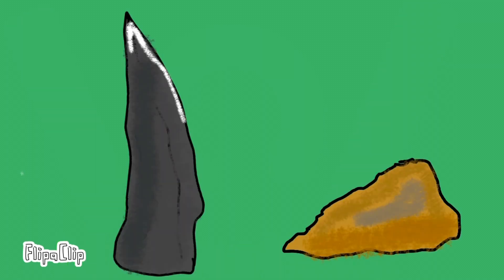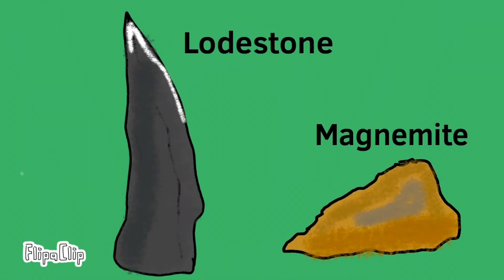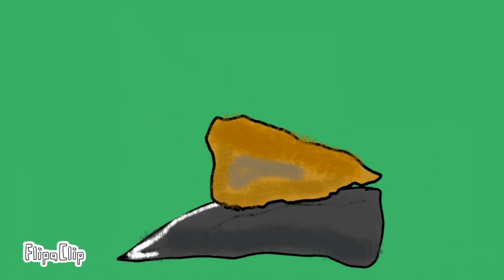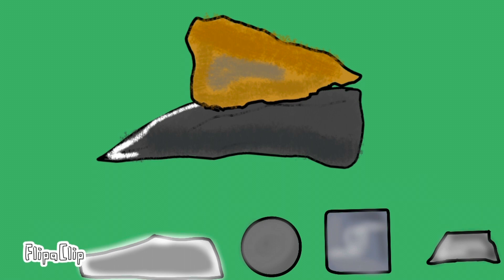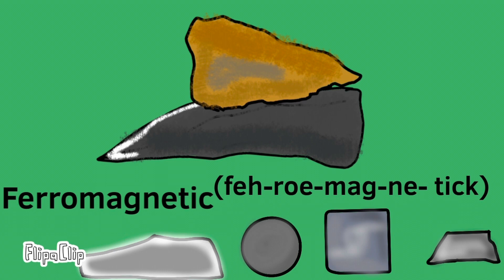We're not gonna use these. We're gonna use magnetic rocks. Lodestone and magnetite. Let's use steel, nickel, cobalt, and iron since they're easily attracted to magnets. Such objects are called ferromagnetic materials.